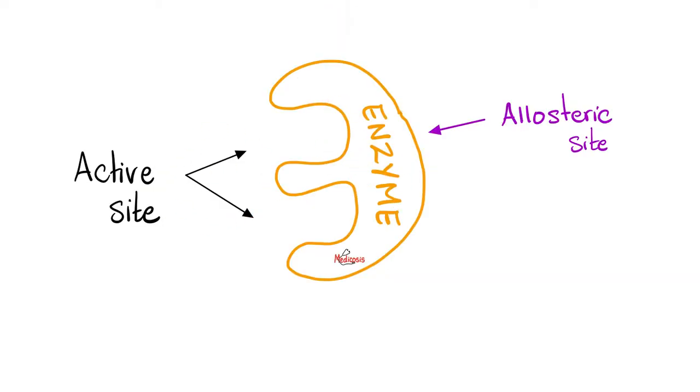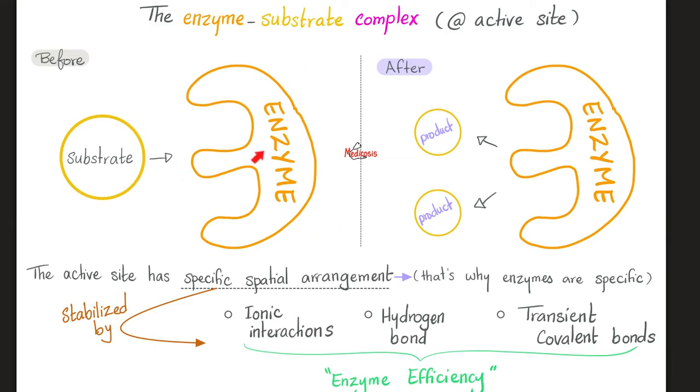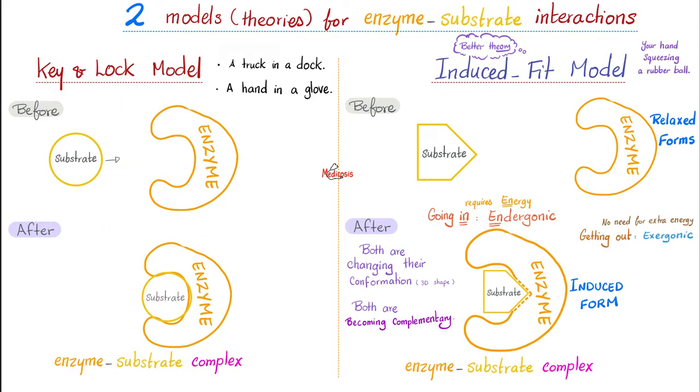Enzymes have a front door, the active site, and a back door, allosteric site. Here is a substrate and the enzyme before the reaction begins, and then after the reaction, we have products instead of substrate. We talked about the key and lock model, as well as the induced fit model before. Please pause and review.